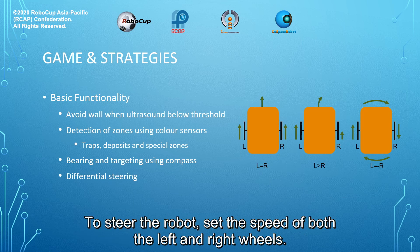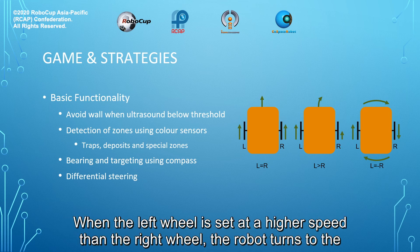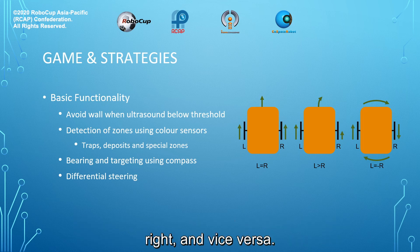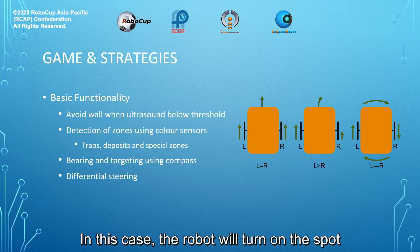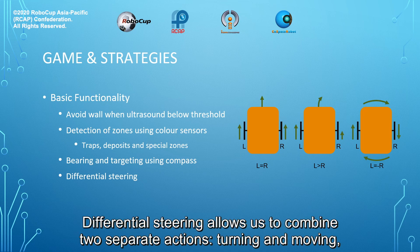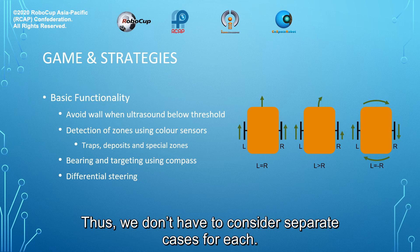To steer the robot, we control the speed of both the left and right wheels. When both wheels are set to forward, the robot will move straight. When the left wheel is set at a higher speed than the right wheel, the robot turns to the right, and vice versa. In this case, the robot will turn on the spot. Differential steering allows us to combine two separate actions — turning and moving — into one. Thus, we don't have to consider separate cases for each.